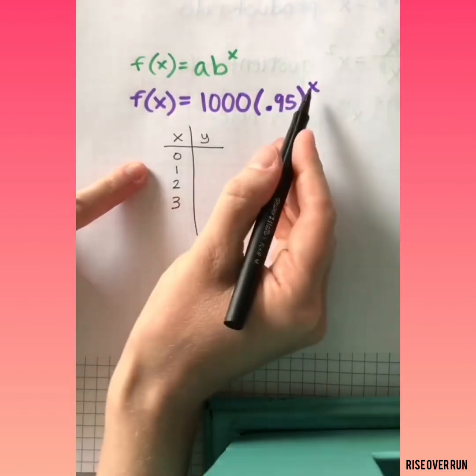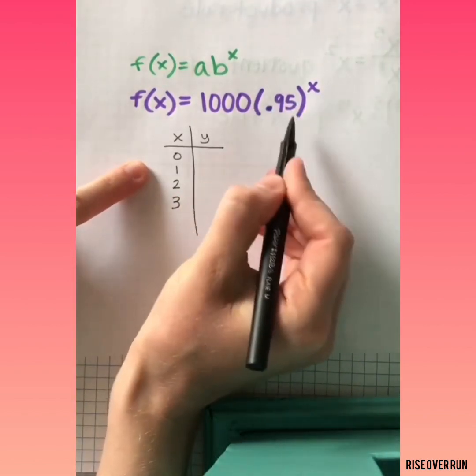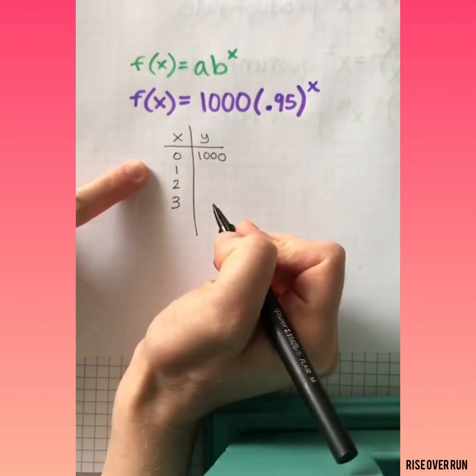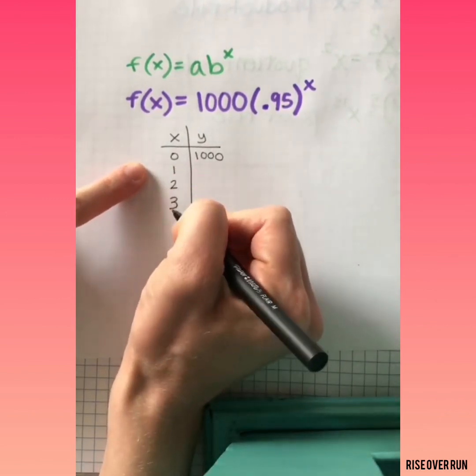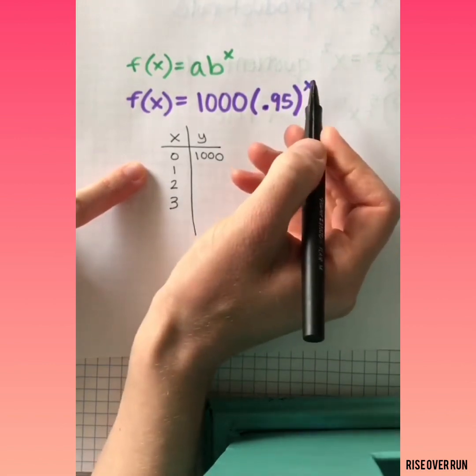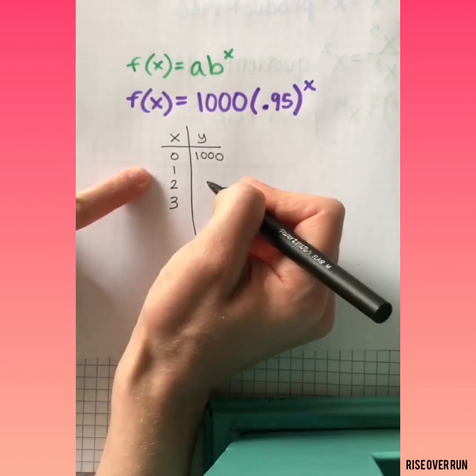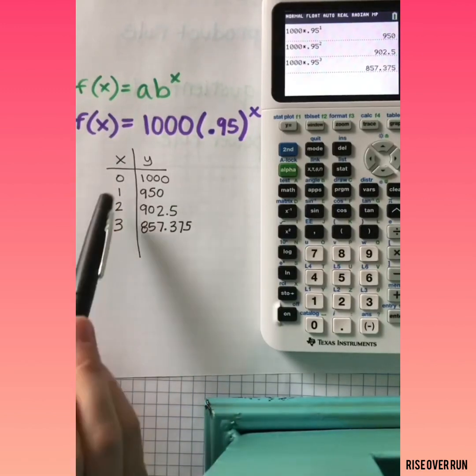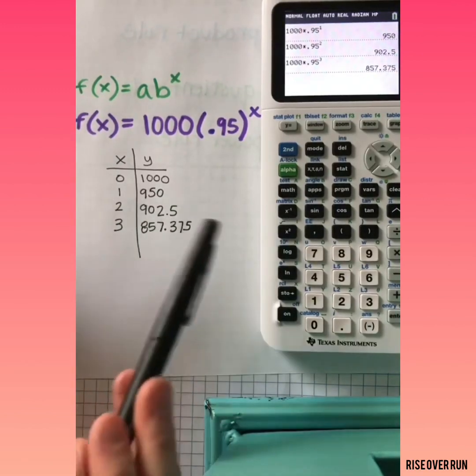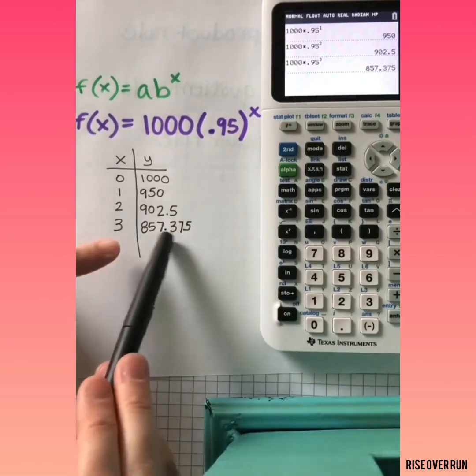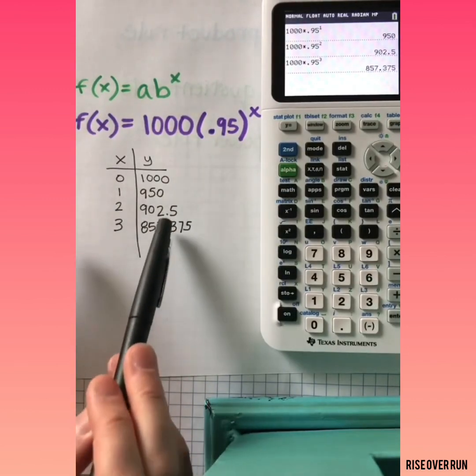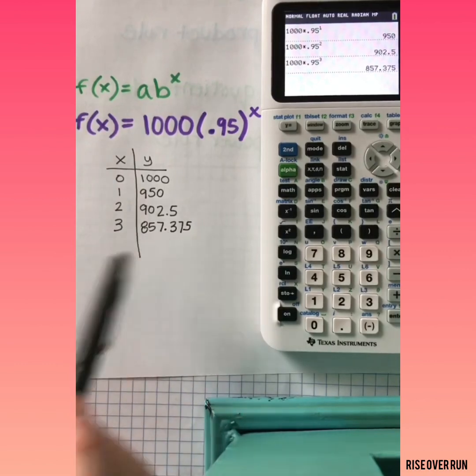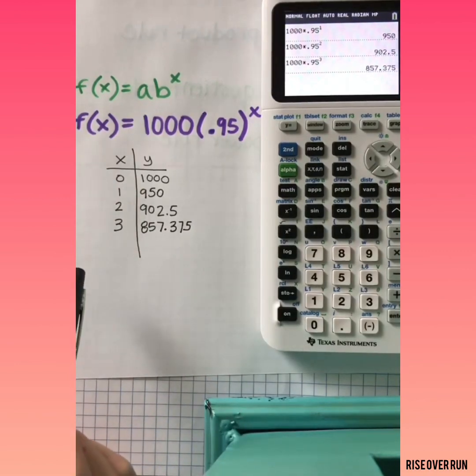When we plug in 0, this whole value becomes 1, so we have our starting population of 1,000. Then we can plug in different numbers for the variable to get the population after different years. Right here we can see how the population would change after 1, 2, and 3 years. Now like many mathematical models, it's not perfect because we have these decimals here. So if we were asked for a specific year, we would need to round this to a whole number since we're talking about deer.